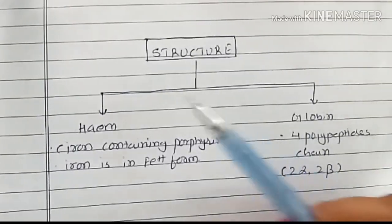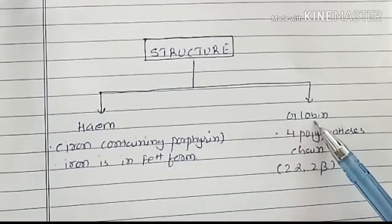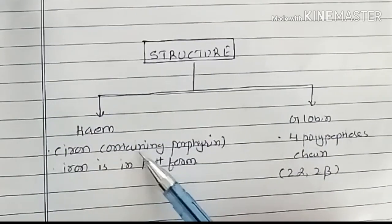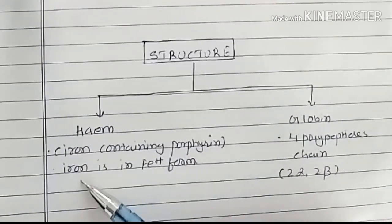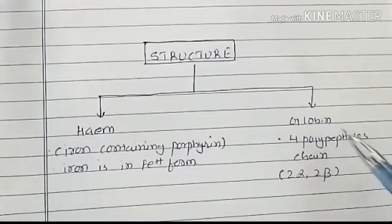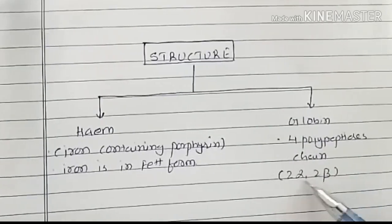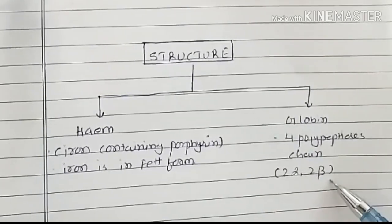Structure of hemoglobin. Hemoglobin is composed of heme and globin. Heme is iron-containing porphyrin in which iron is present in Fe2+ state. Globin is made up of four polypeptide chains: 2-alpha and 2-beta.